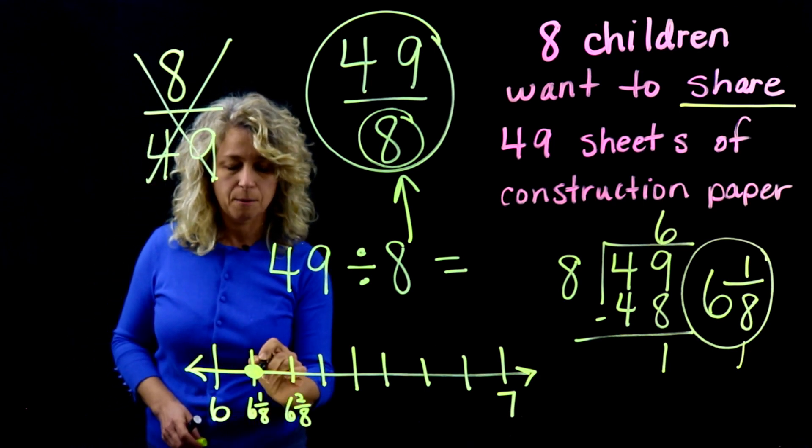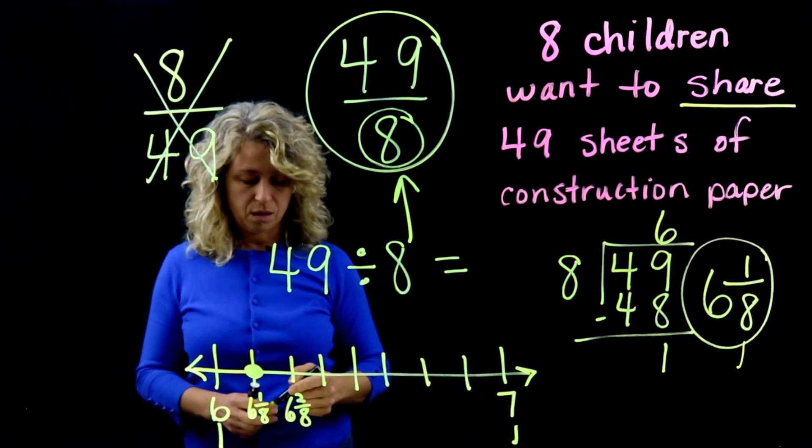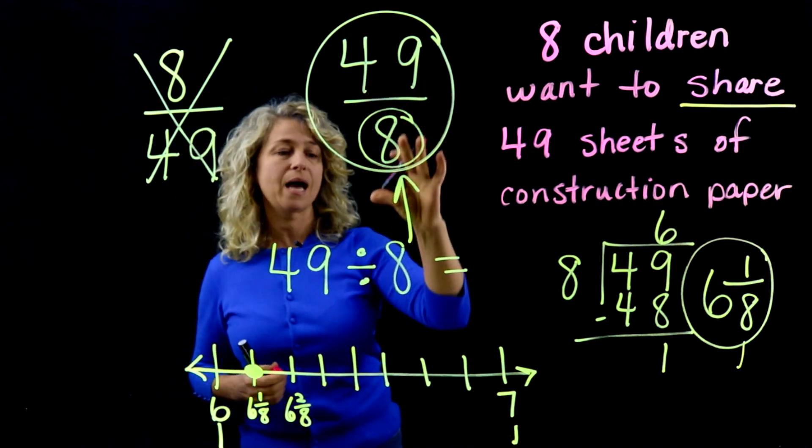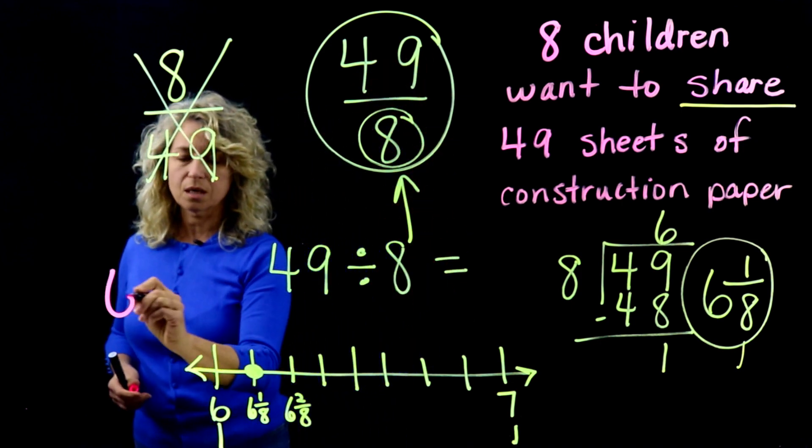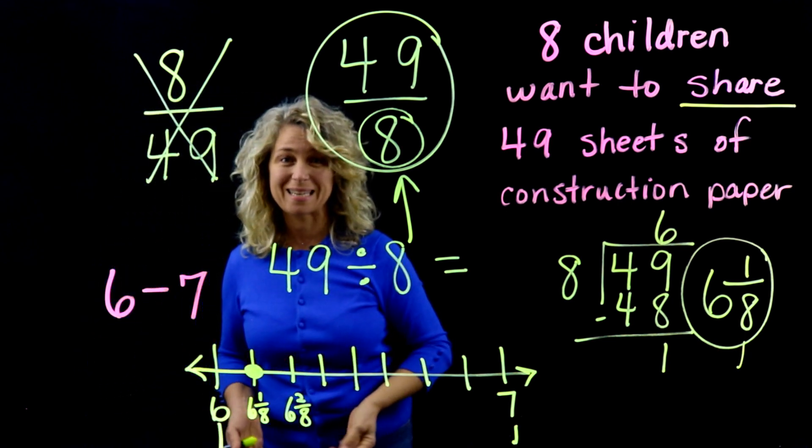Now do you notice your whole numbers 6 and 7? So your answer of 49/8 lies between the whole number 6 and the whole number 7. Okay, so I hope that makes sense.